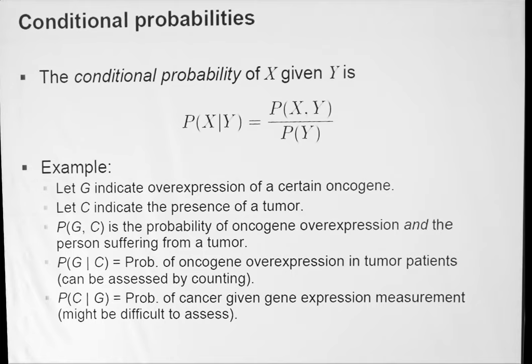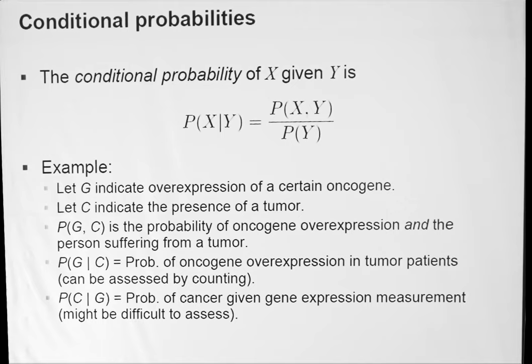As an example, consider the random variable G to indicate overexpression of a certain oncogene, and let C denote a random variable that indicates the presence of a tumor. Then P of C and G would be the probability of oncogene overexpression and the person suffering from the tumor. P of G given C would be the probability of oncogene overexpression in tumor patients, which we can assess by checking the frequency of oncogene overexpression in people who have cancer. But P of C given G — the probability of cancer given the overexpression of the gene — might be difficult to assess.